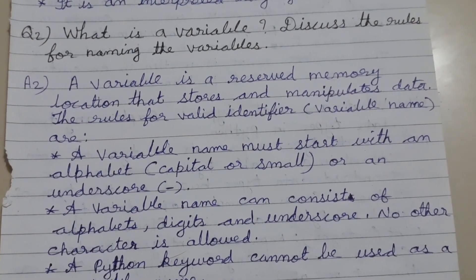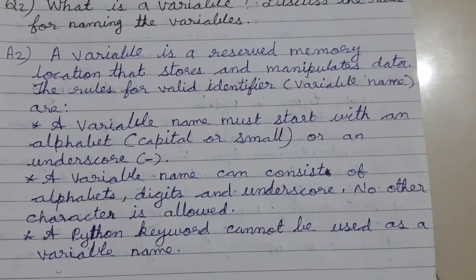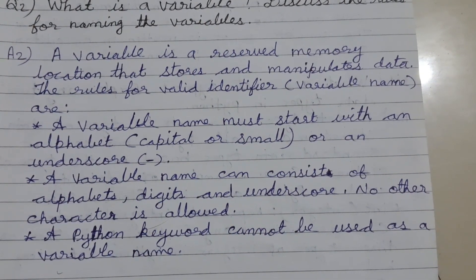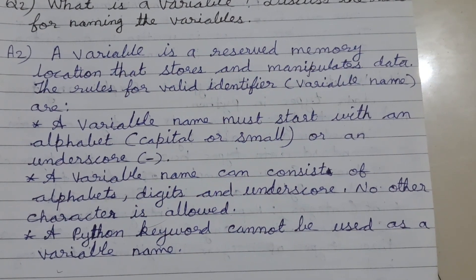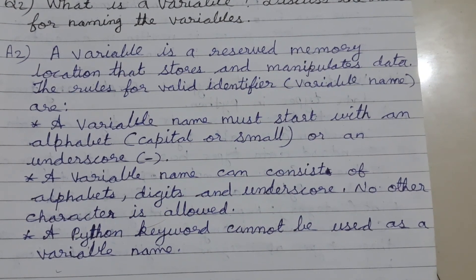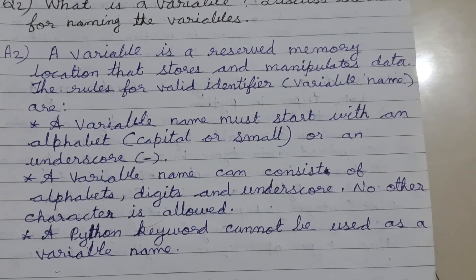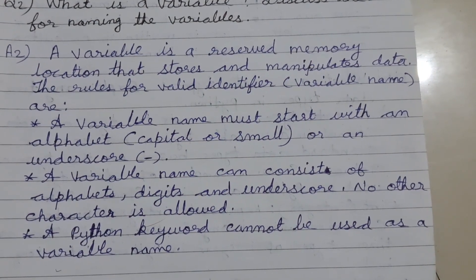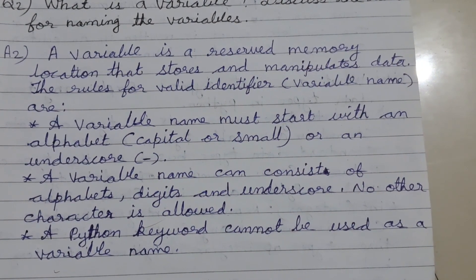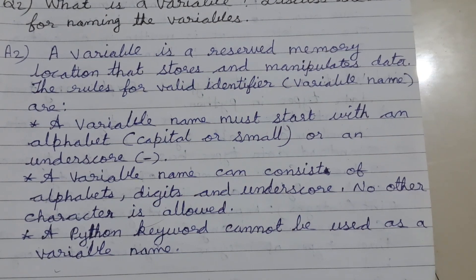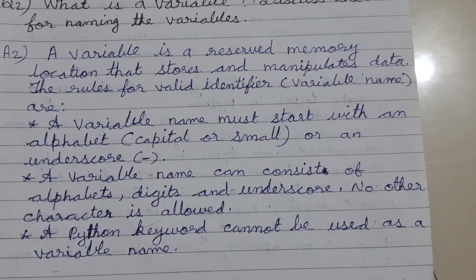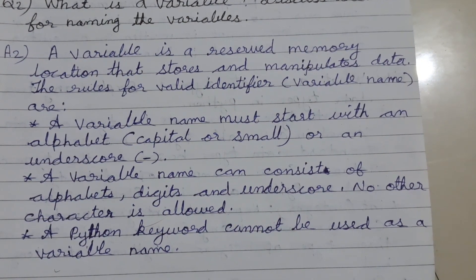What is a variable? Discuss the rules for naming variables. A variable is a reserved memory location that stores and manipulates data. The rules for valid variable names are: 1st, a variable name must start with an alphabet, capital or small, or an underscore. 2nd, a variable name can consist of alphabets, digits, and underscore — no other character is allowed. 3rd, a Python keyword cannot be used as a variable name.